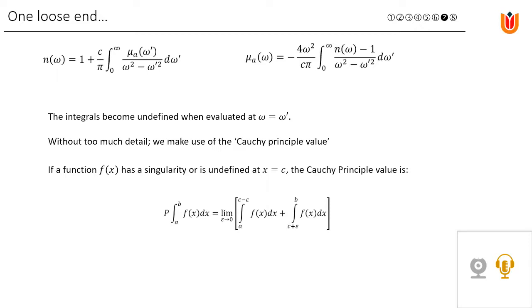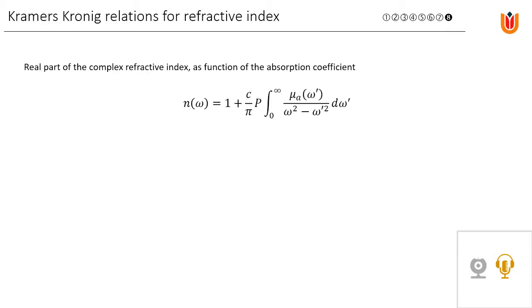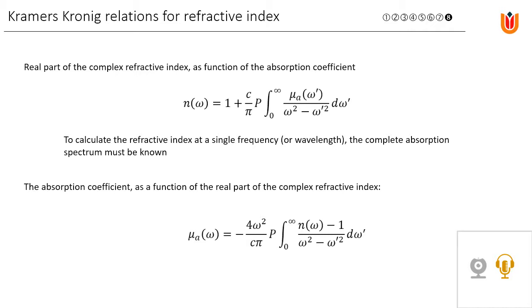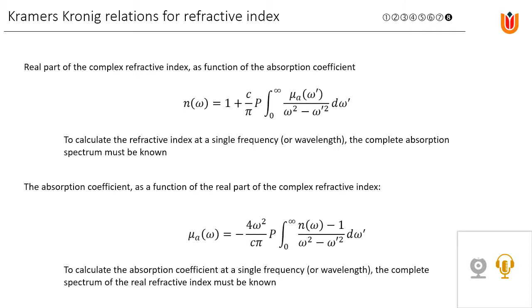Taking this approach, we finally have the Kramers-Kronig relation for the real part of the complex refractive index as a function of the absorption coefficient. To calculate the refractive index at a single frequency or wavelength, the complete absorption spectrum must be known. Equivalently, the absorption coefficient can be expressed as a function of the real part of the complex refractive index — with the same drawback that the complete spectrum of the real refractive index must be known to calculate the absorption at a single frequency. This completes the derivation of the Kramers-Kronig relations for refractive index.